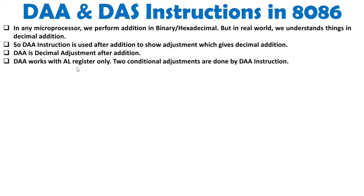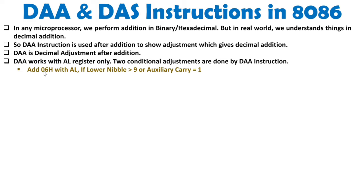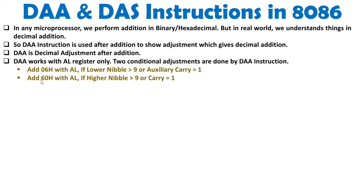To have adjustment in terms of decimal, there are two conditional adjustments. First, you will add 06 to AL if the lower nibble is greater than 9, or if the auxiliary carry is equal to 1. Second, you will add 60 to AL — meaning add 6 to the higher nibble — if the higher nibble is greater than 9, or if the carry flag is equal to 1.